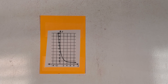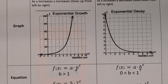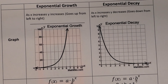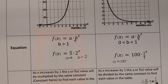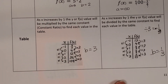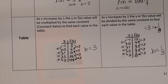Hopefully you can remember all three ways we learned. Our learning target was to determine from graphs, equations, or tables whether something is an exponential growth model or an exponential decay model. Good luck with that — mSquared signing out.